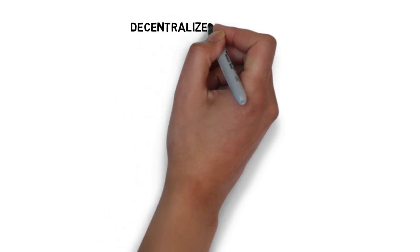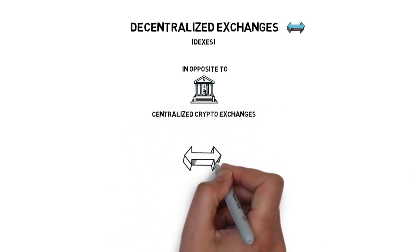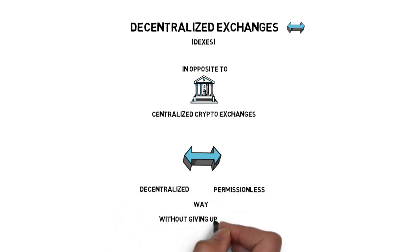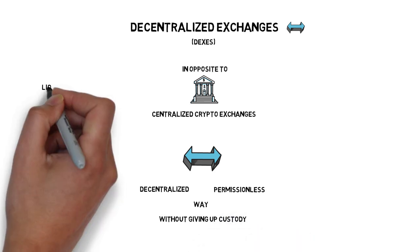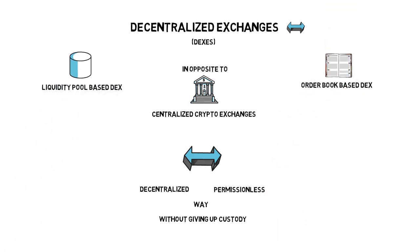Decentralized exchanges or DEXs, in opposite to standard centralized crypto exchanges, allow for exchanging crypto assets in a completely decentralized and permissionless way without giving up the custody of the coins. There are two main types of DEXs: the liquidity pool based and the order book based ones. A few examples of the liquidity pool based ones are Uniswap, Kyber, Balancer, and Bancor. Loopring and IDEX are examples of the order book based ones.